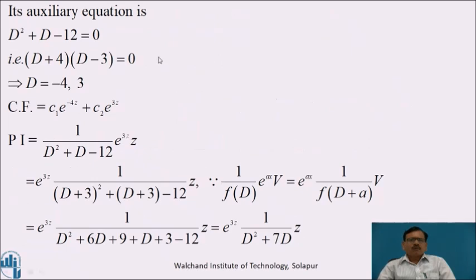The auxiliary equation is D² + D - 12 = 0. Factoring gives (D+4)(D-3) = 0, so D = -4 and D = 3. Therefore, CF = c₁e^(-4z) + c₂e^(3z).